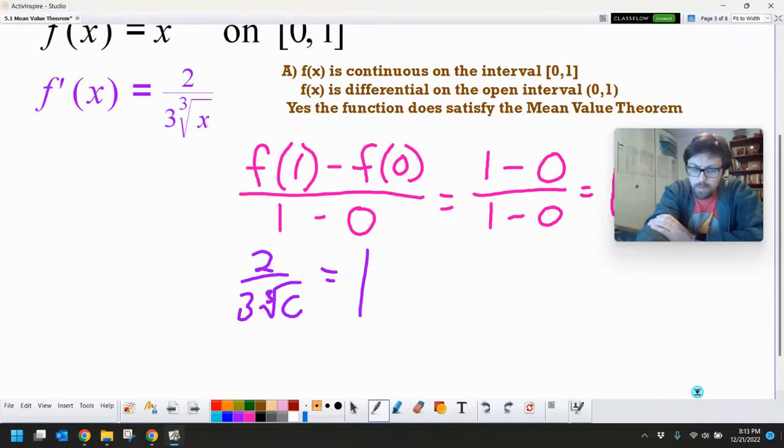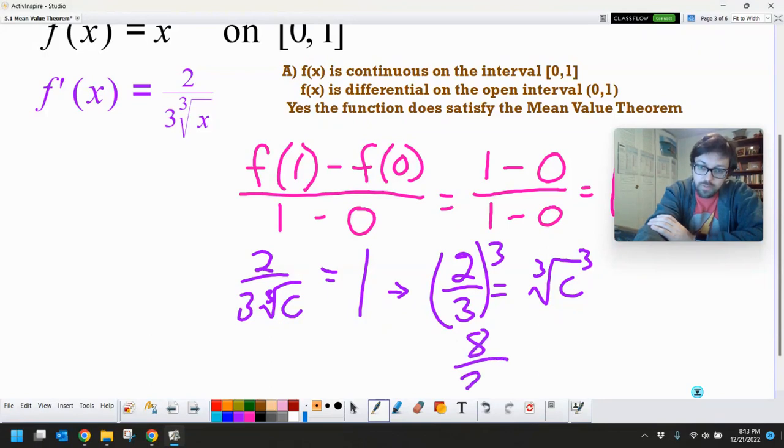What is that C value where we equal our average rate of change? A little bit of solving. I'm going to multiply both sides by the cubed root of C just to get that out of the denominator. So we got two thirds equals the cubed root of C. And then all I got to do is just cube both sides. And then I know what C is. So I get 8/27 equals C.